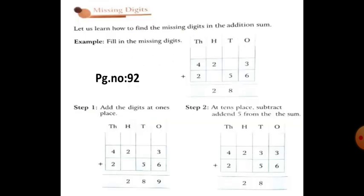So children, everyone take AMAX concept book, page number 92. So there is a concept, missing digits.